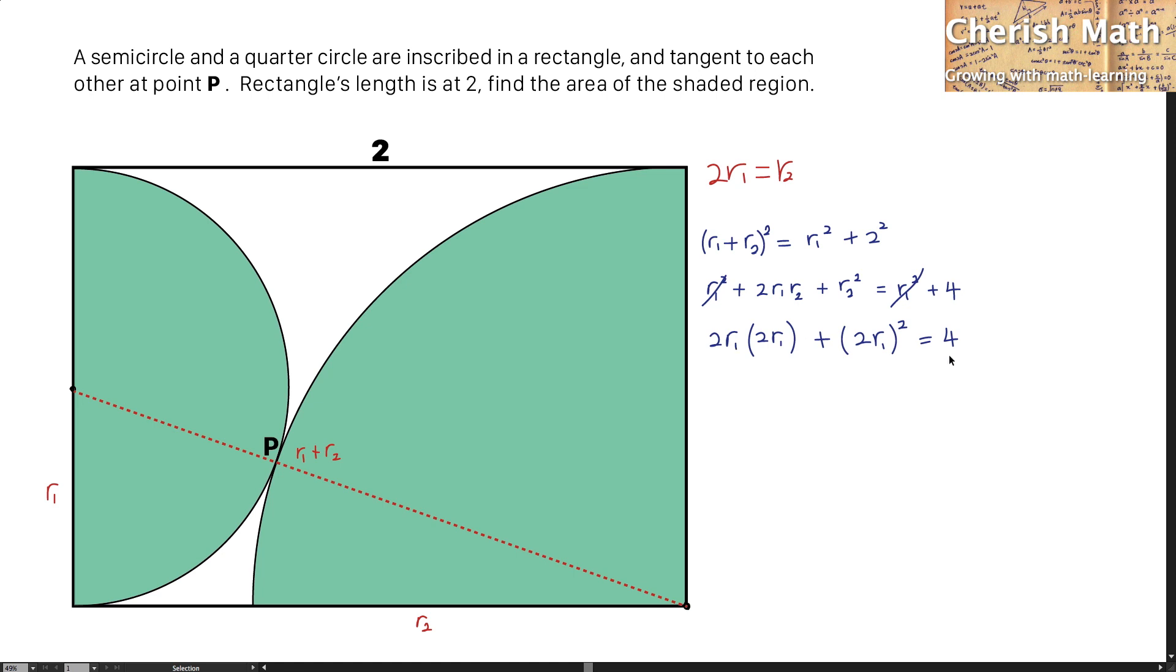By expanding it, this is going to be, and I'm going to make R1 the subject here. That is going to be 1 over the square root of 2 as the value of R1.